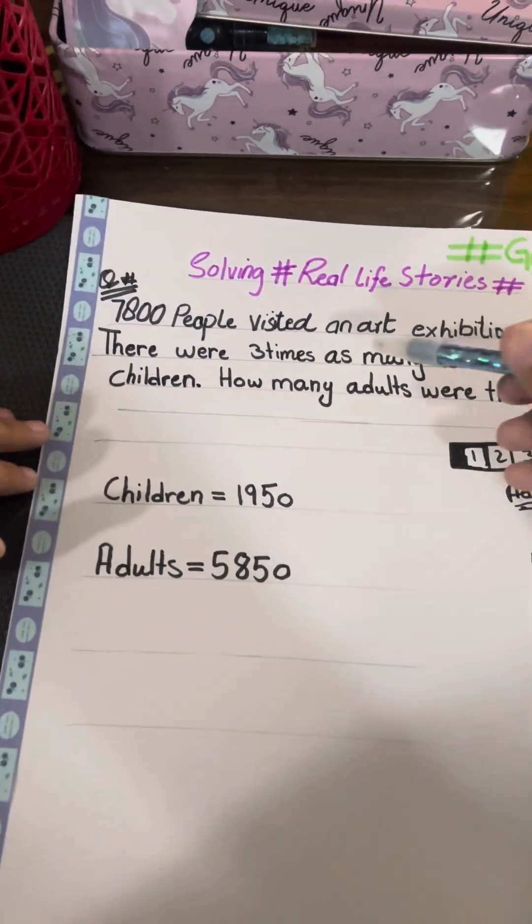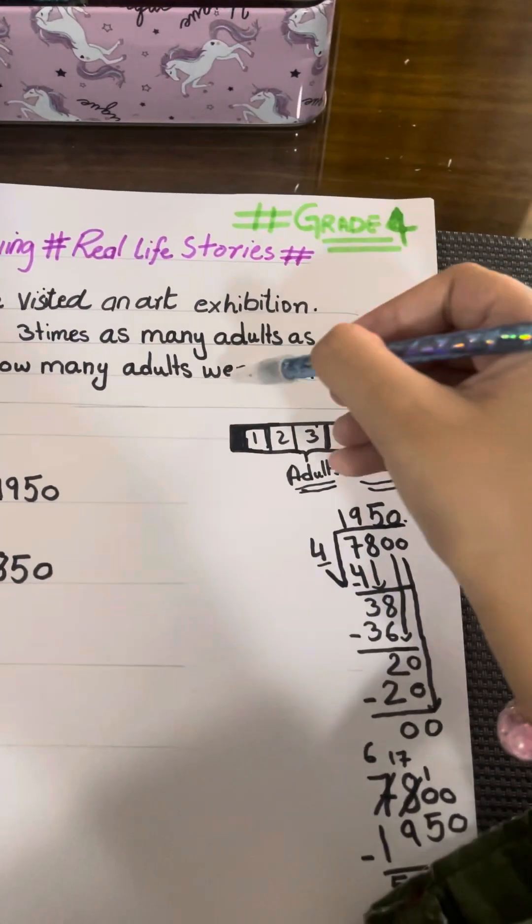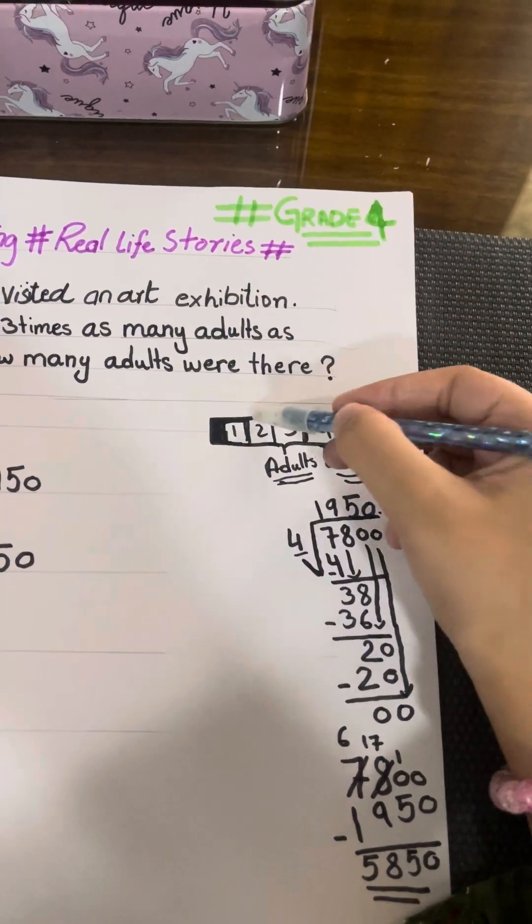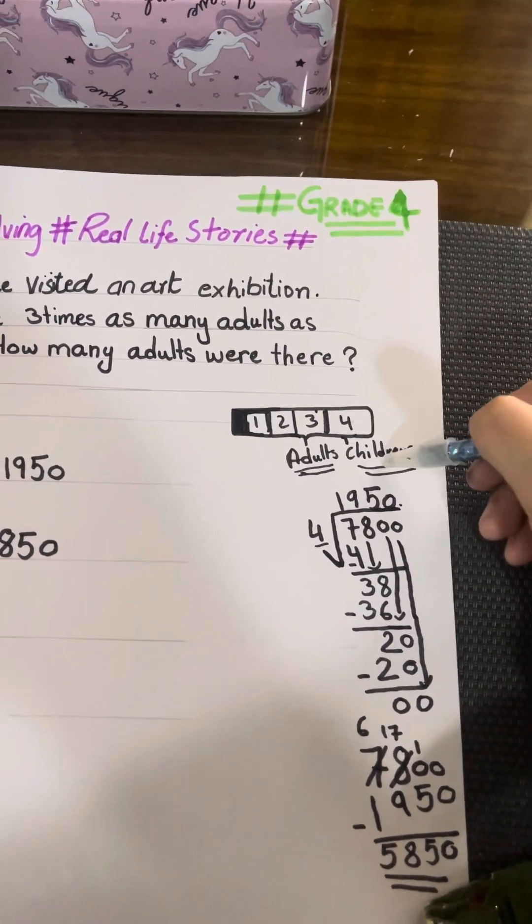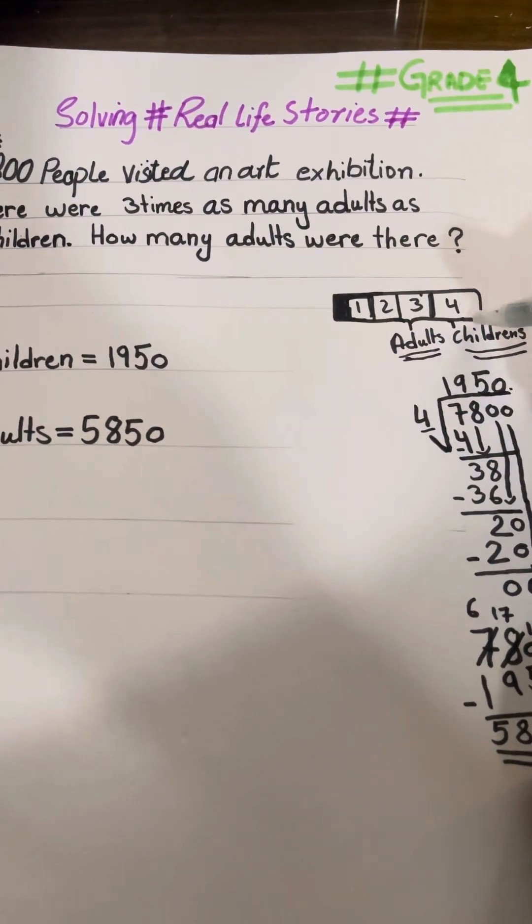So they're asking how many adults were there. There were three parts of adults and one part of children, so the total parts are four.